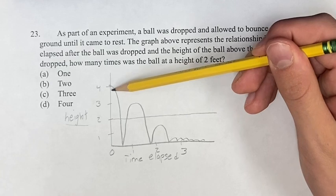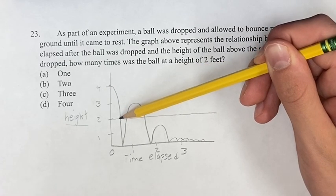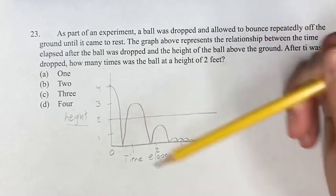So it's coming down from four, and then it's coming down to three, and then it passes two right there, so it was at two feet right there. So we have one instance.